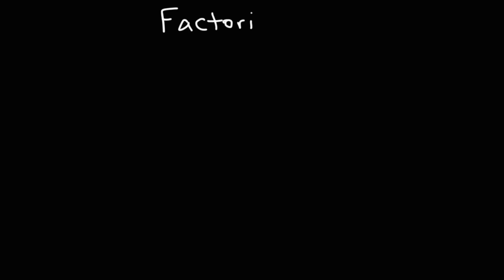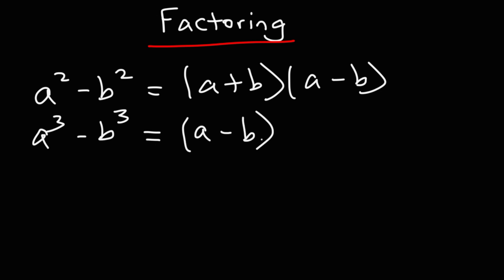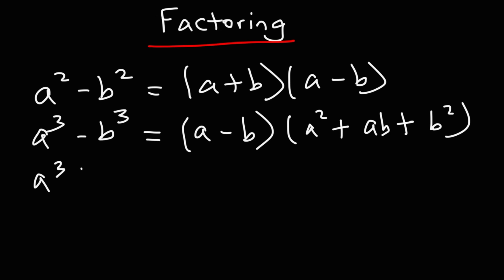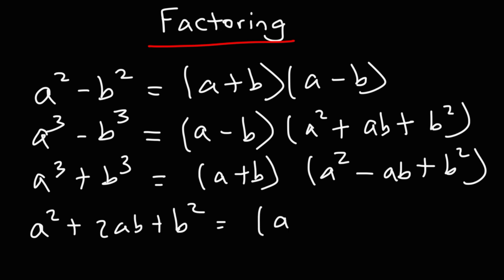Now let's talk about formulas associated with factoring. For a difference of two squares, a squared minus b squared factors to (a plus b)(a minus b). For a difference of two cubes, a cubed minus b cubed factors to (a minus b)(a squared plus ab plus b squared). For the sum of two cubes, it's (a plus b)(a squared minus ab plus b squared). And for a perfect square trinomial, a squared plus 2ab plus b squared factors to (a plus b) squared. Those are the key formulas for factoring algebraic expressions.